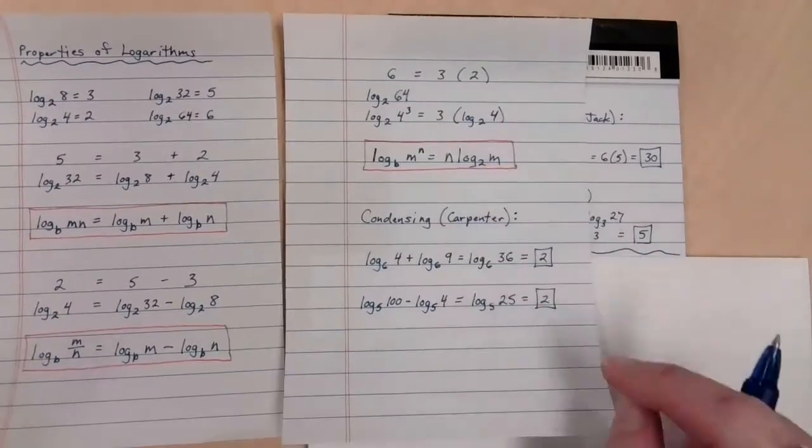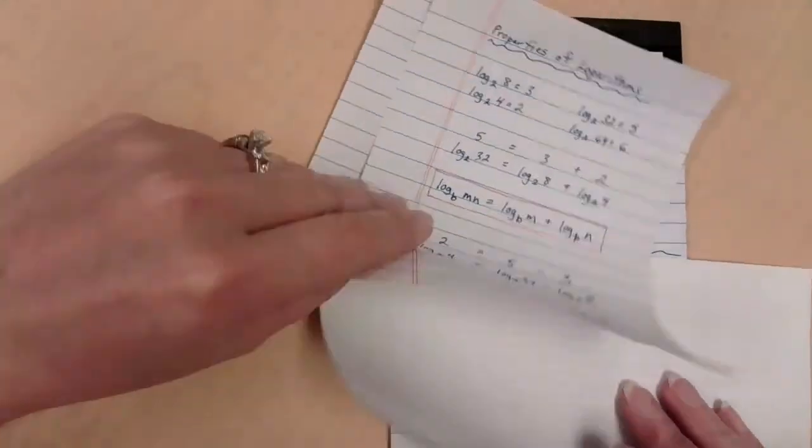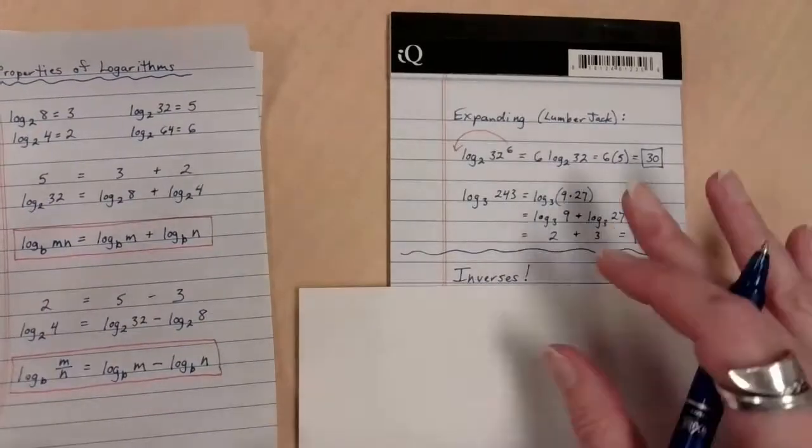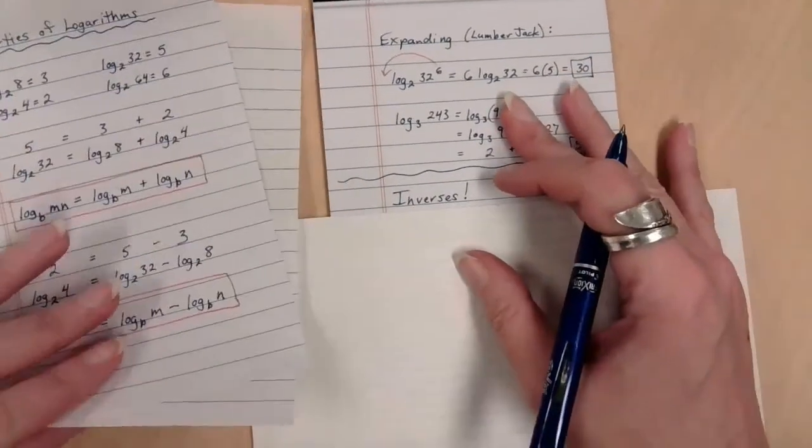We've got these three properties. Make sure that you have them where you can find them. Last thing. You've got to see this, because otherwise, you're not going to see this.